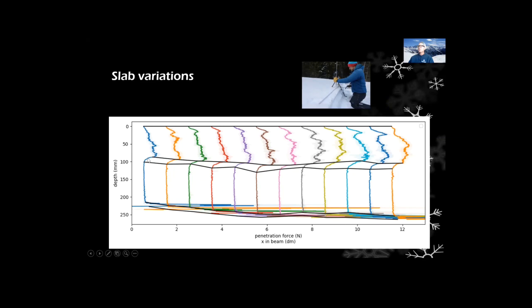These are the results of our variations in our slab penetration resistance. In that one test over 120 centimeters, we have 12 different snow micro pen profiles.